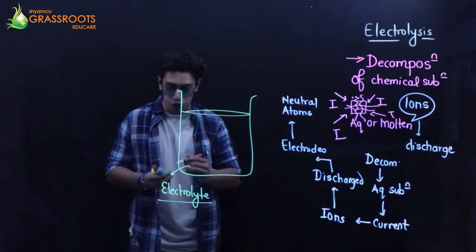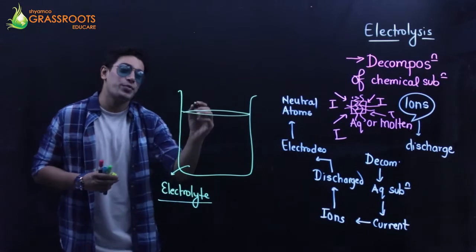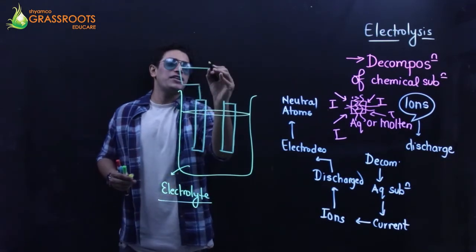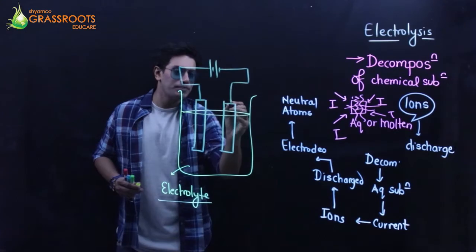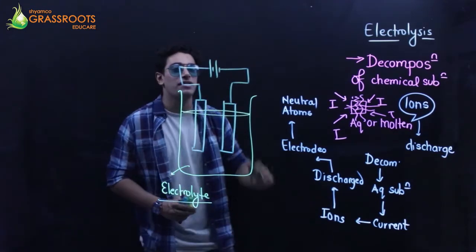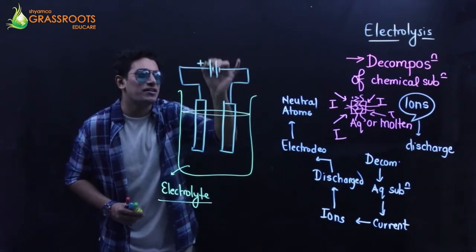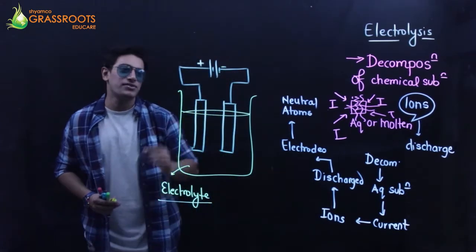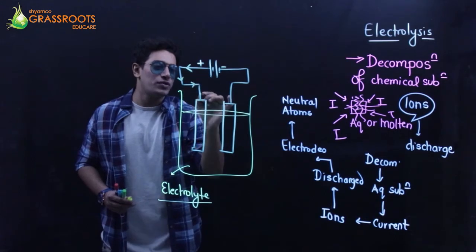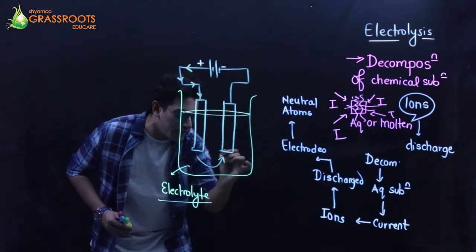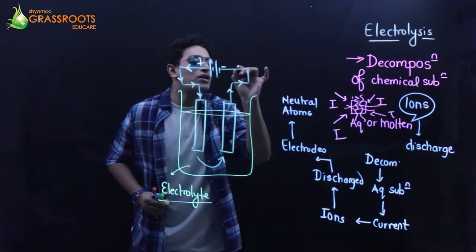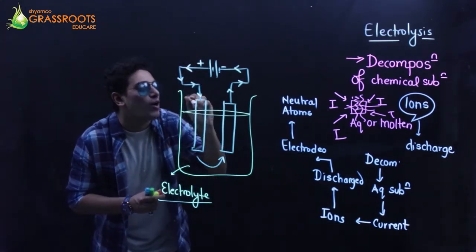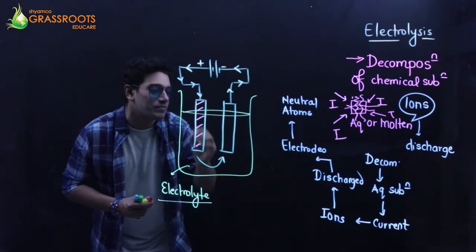Then we have the rods. One rod is connected to the positive terminal of the cell, the other to the negative terminal. This is plus and minus. Current always flows from positive to negative, and inside it goes this way - we're talking about current - and it completes the path.